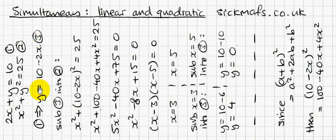And now I'm going to replace this y, y squared, with 10 minus 2x squared, because y is equal to 10 minus 2x. So y squared is equal to 10 minus 2x all squared, as it says here.